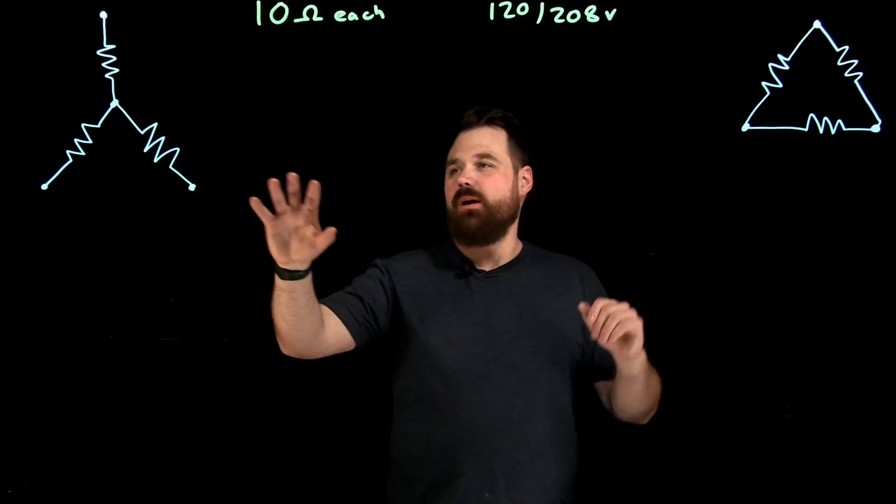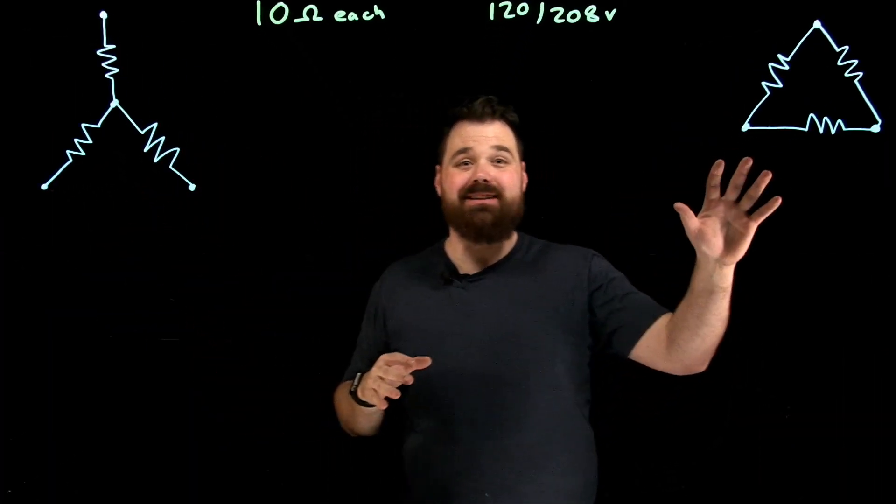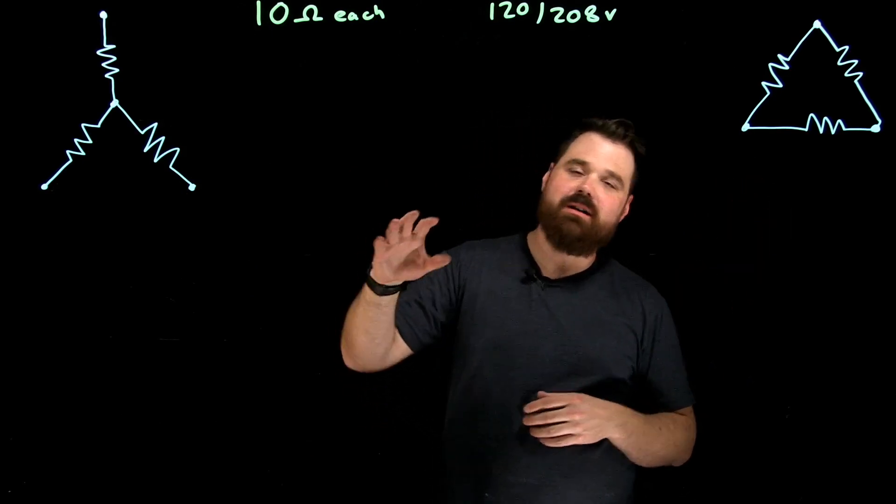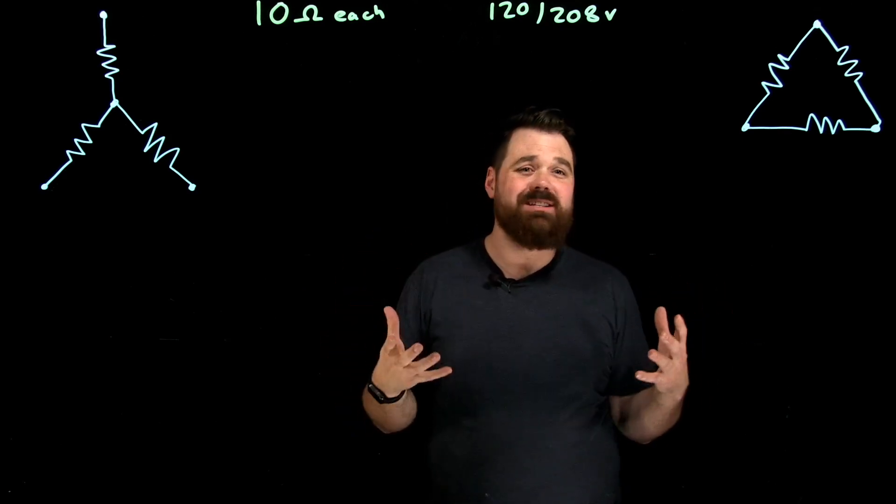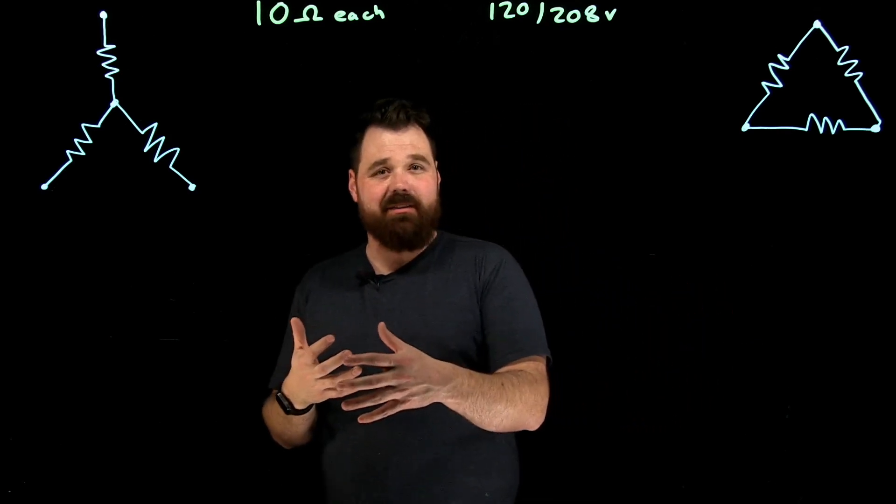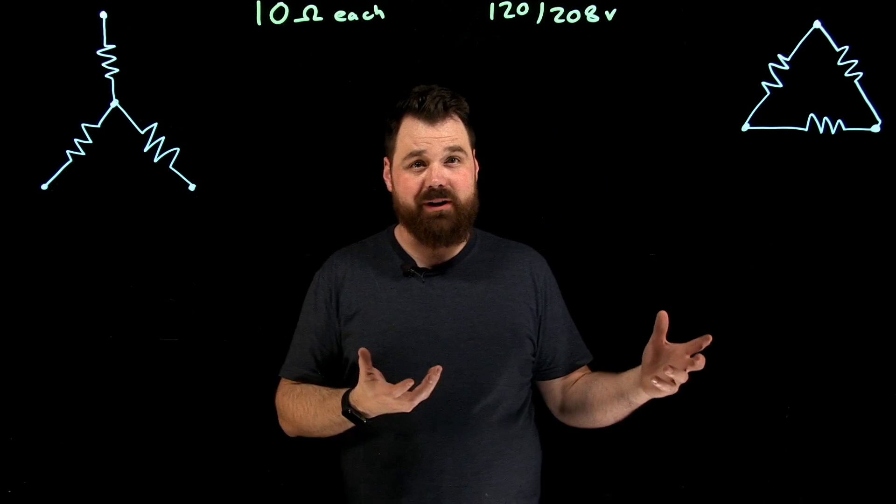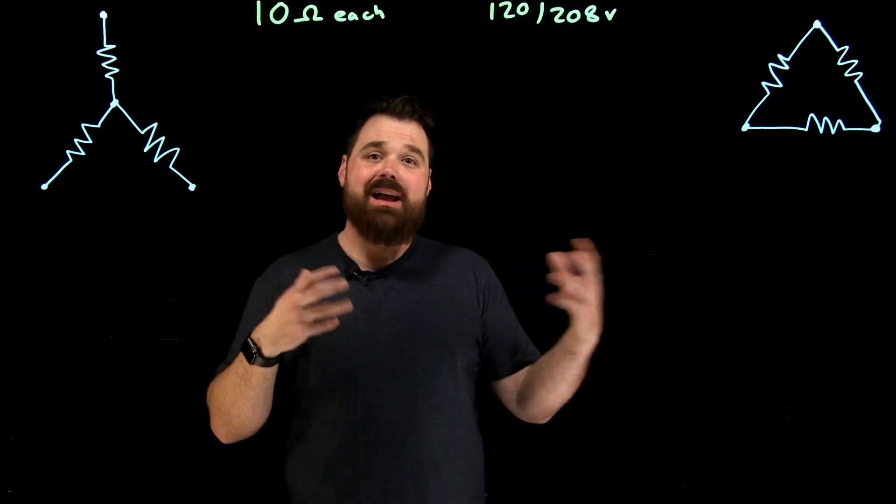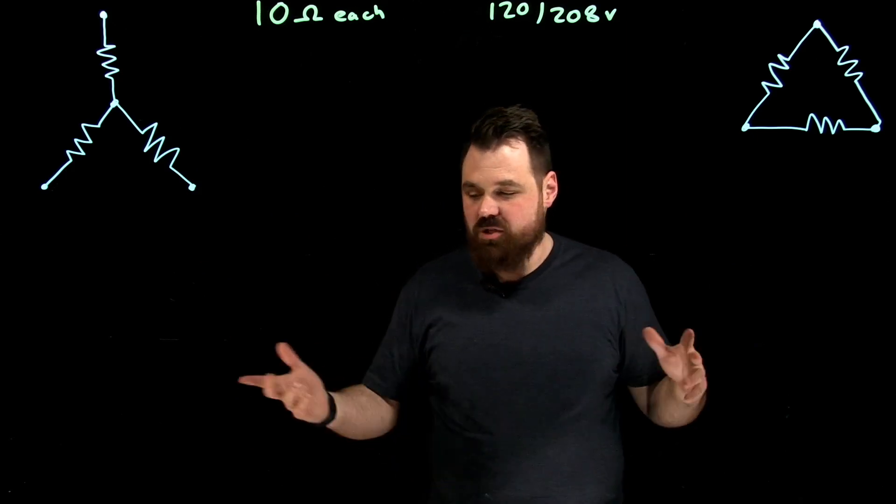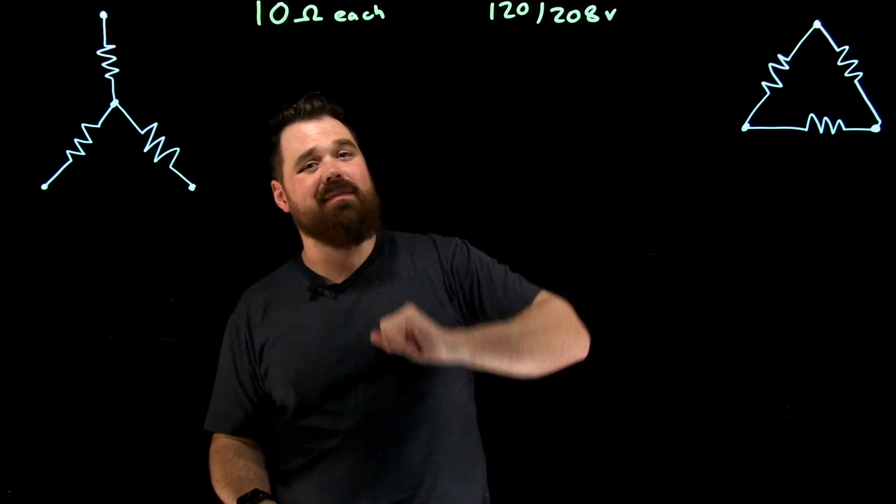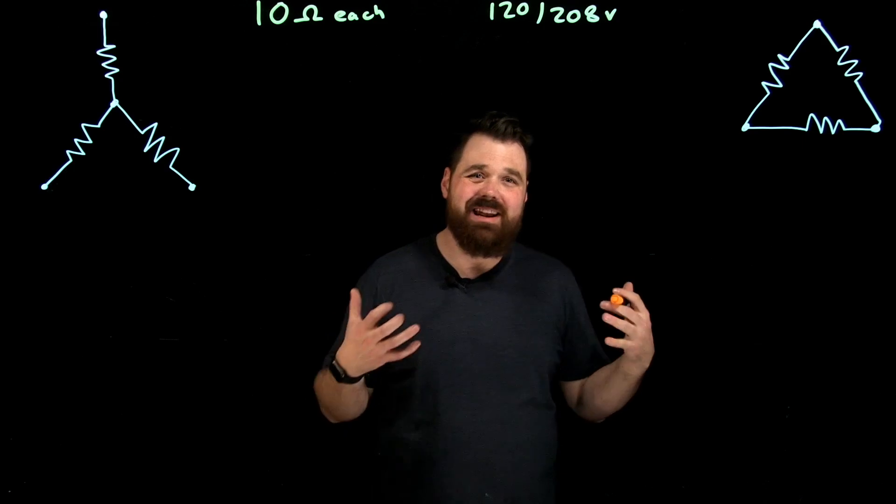So what I've drawn here is I've got my Y-connected resistors and I've got my Delta-connected resistors. Now keep in mind, we're just going to pretend these are all 10 ohms each. I go into a bucket, I find three 10-ohm resistors, I'm going to connect them, and I want to know how much power I'm going to get out. Which way am I going to get more power, and is it different, in Y or in Delta? Now I've just picked a pretty common source here, so I said we have a 120/208-volt source.